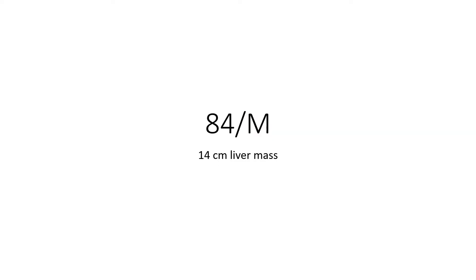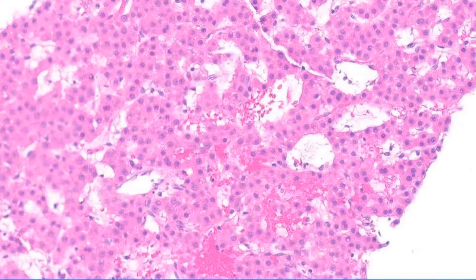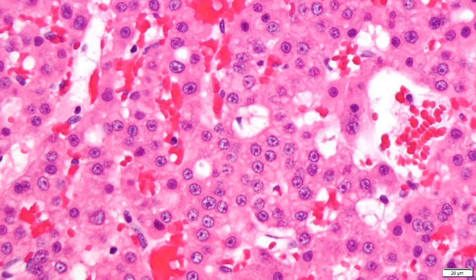Let's look at a few cases. This 84-year-old man — remember, if you have a large mass in an 84-year-old man, by definition this is more likely to be an HCC than anything else. At low power there is no background non-neoplastic liver, which is a disadvantage. At higher power this certainly looks crowded, but I have no normal liver to compare it with. It looks monotonous and concerning, and now I'm seeing a lot of pseudogland formation, so I'm even more concerned.